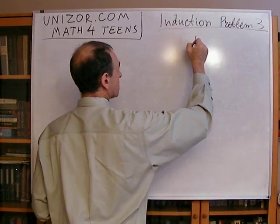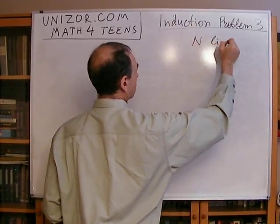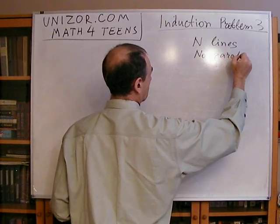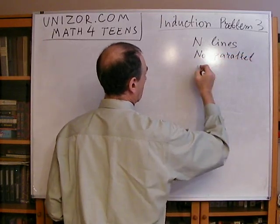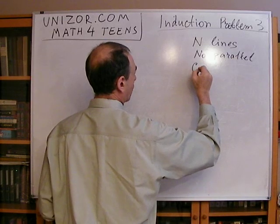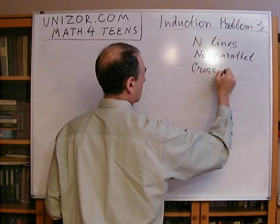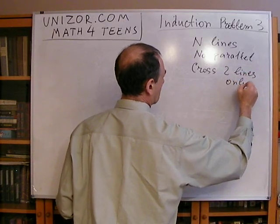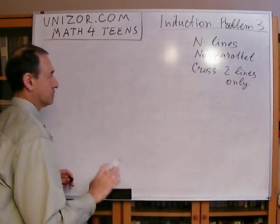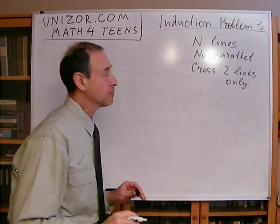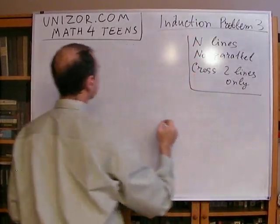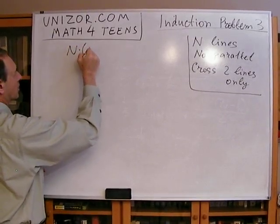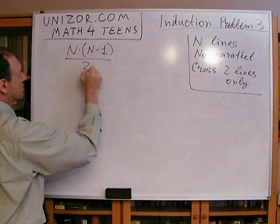So the formula applies to n lines with no parallel lines, and only two lines crossing at any given point — no three lines crossing at the same point. The formula I would like to prove is that the number of crossing points is n(n-1)/2.